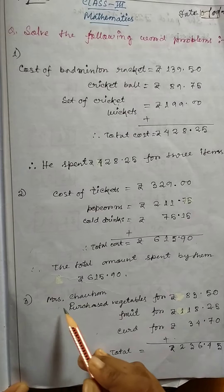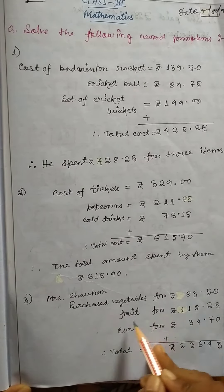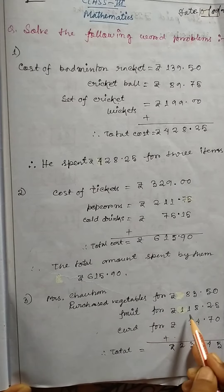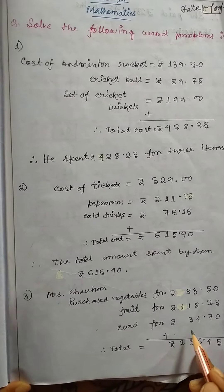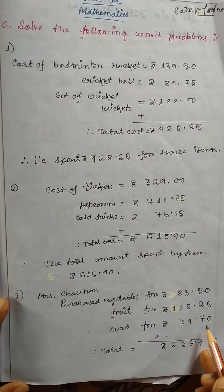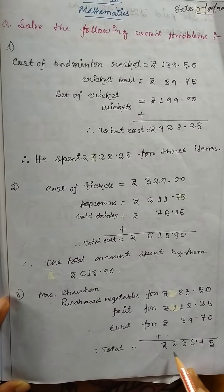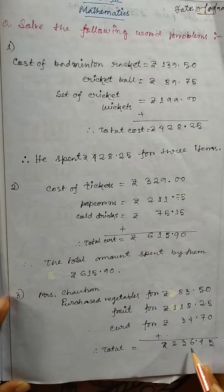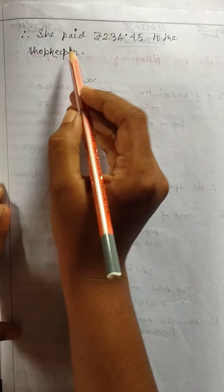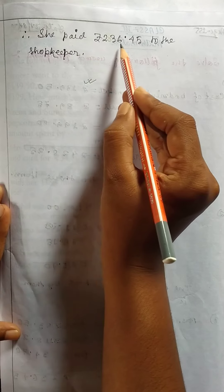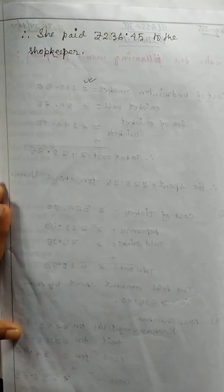Mrs. Chauhan purchased vegetables for rupee 83.50, fruit for rupee 118.25, and curd for rupee 34.70. So total cost equals rupee 236.45. She paid rupee 236.45 to the shopkeeper.